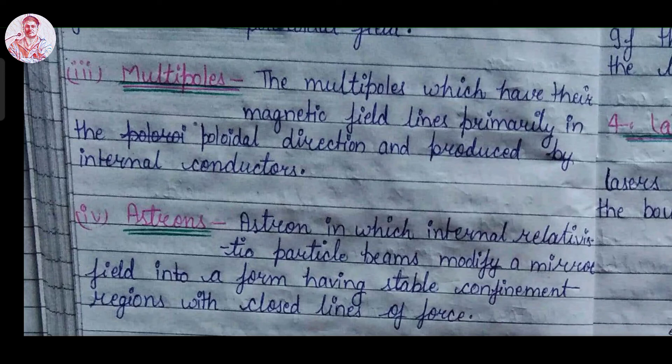And our third closed system is multipoles. The multipoles which have their magnetic field lines primarily in the poloidal direction are produced by the internal conductor.